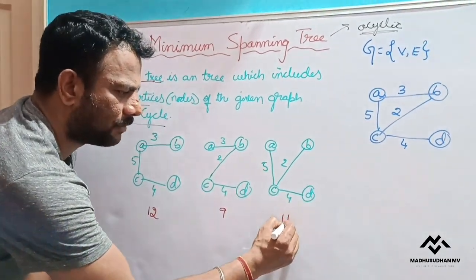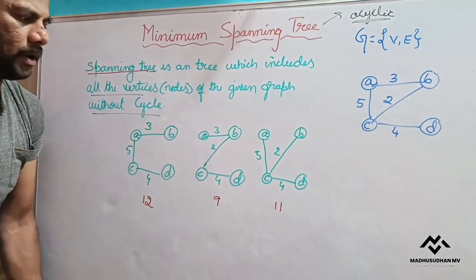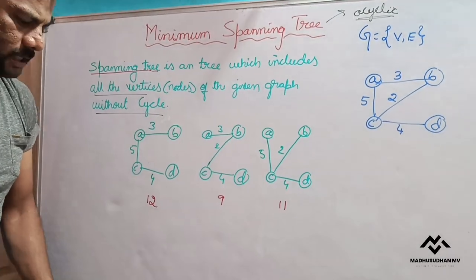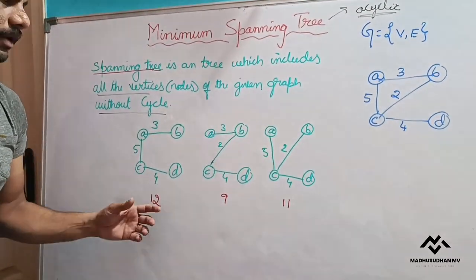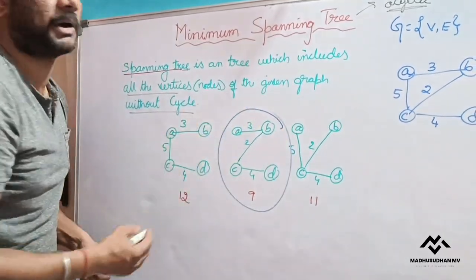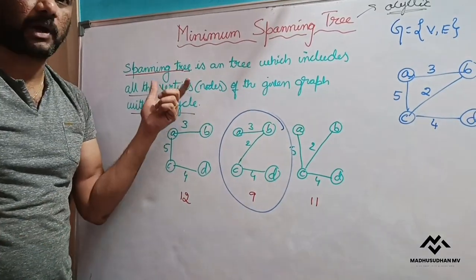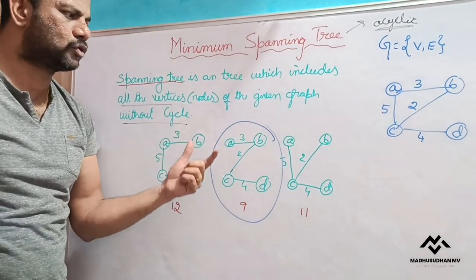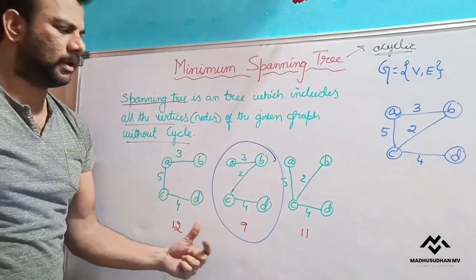So this is 7 plus 4, 11. This is the total weight of this one. Out of that, which is having minimum total weight? 12, 9, 11, so 9. So this is our minimum spanning tree. Minimum spanning tree is the spanning tree whose total weight should be minimum when compared to others.